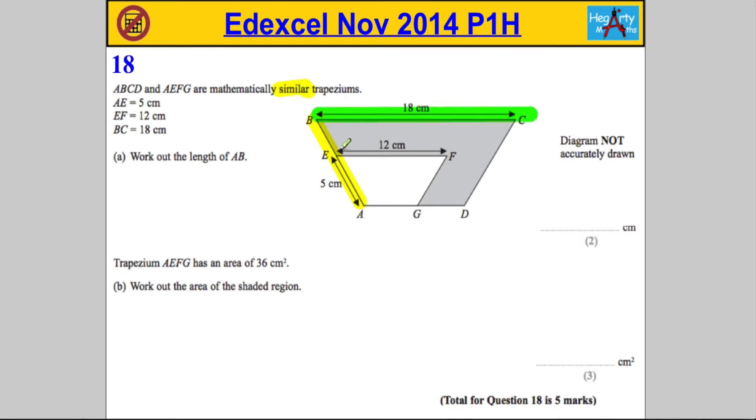This side here, the 18, and this side here, the 12, are what I would call corresponding sides. The LSF, or the length scale factor, is going to be found by doing—I always do the big side divided by the small—so I'm going to do 18 divided by 12.